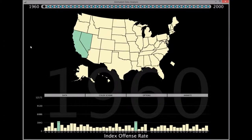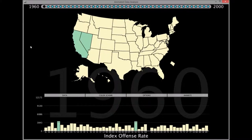Hello, and welcome to my animated data analysis program demonstration. This program offers a variety of options to allow for better user interaction when looking at single variable geospatial data. For this example, I will be showing United States crime data from 1960 to 2000.